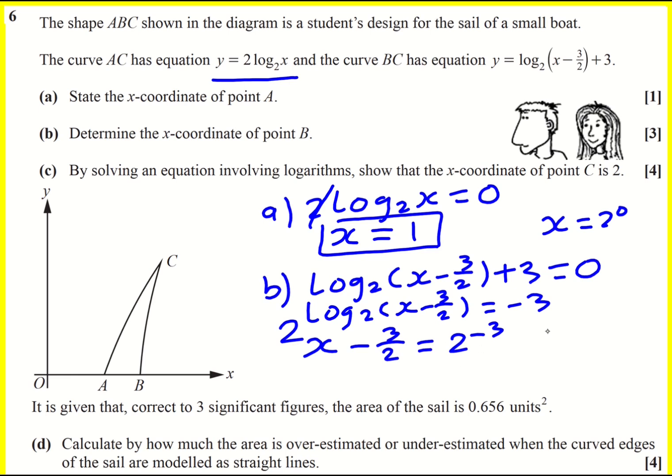Now 2 to the -3, you can put it in your calculator, or you might know that it's 1 over 2 cubed. Let me put this on a new line: (x - 3)/2 is going to be 1/8. Then x is going to be, we could write this as multiplying top and bottom by 4, so 12/8, so it's going to be 13/8. Of course, at any point you could put that in your calculator.